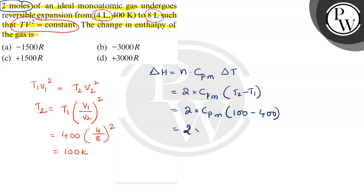2 times molar heat capacity at constant pressure is 5 by 2 R times minus 300. So it will be minus 1500 R.